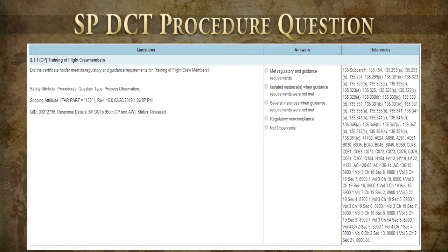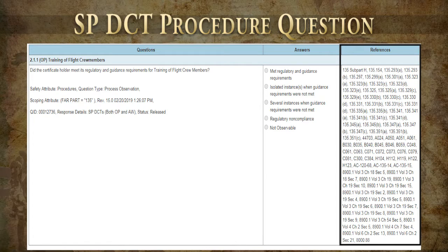For example, let's look at a procedures question in SPDCT 2.1 Training and Qualification. This particular question is based on element 2.1.1 — Training of Flight Crew Members — which is one of the derivative elements of subsystem 2.1. All the references listed in the far-right column come from the specific technical process question references in EPDCT 2.1.1. At the SP level, answering this question is essentially answering the questions to all of those references related to the technical process.